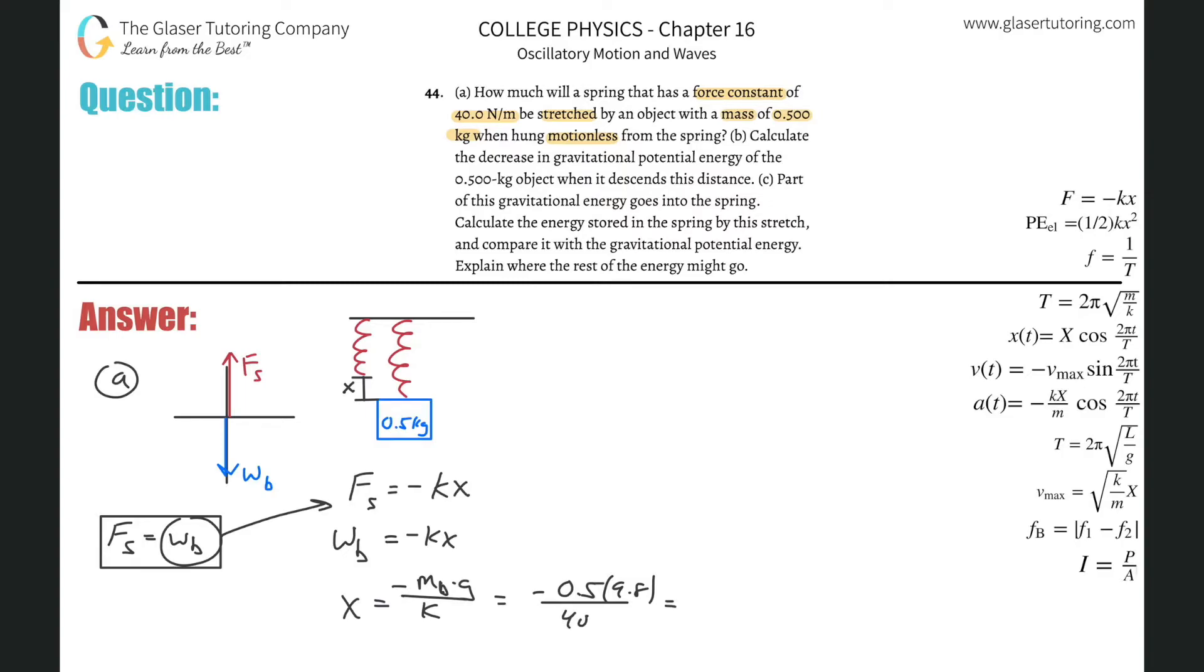And just simply plug it on into the calculator now. So it's negative 0.5 times 9.8, all divided by then 40. And that's going to be a negative value relative to my picture, 0.1, I guess, 3 sig figs. So 1, 2, 3. And that's in meters.